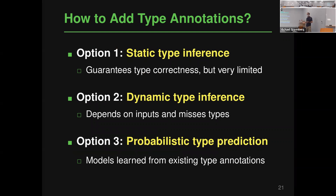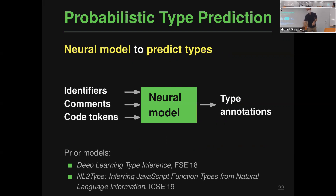There are three approaches to adding type annotations. First, static type inference: great but limited in practice because it tries to be sound, and in many Python cases cannot make useful predictions. Second, dynamic type inference: run the program, observe types, use them as annotations — limited by coverage and overly precise types that don't generalize. Third — our approach — probabilistic type prediction: learn a model from existing type annotations that predicts missing ones.